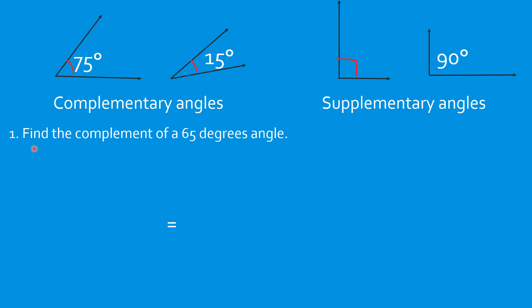Find the complement of a 65-degree angle. Complement means we find the other angle that, when added to the given, equals 90 degrees. Simply: 90 minus the given angle of 65 degrees equals 25 degrees. So the complement of a 65-degree angle is 25 degrees.